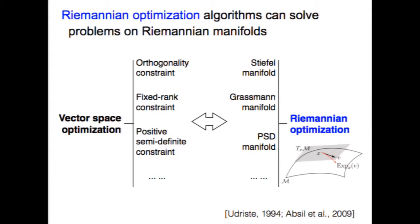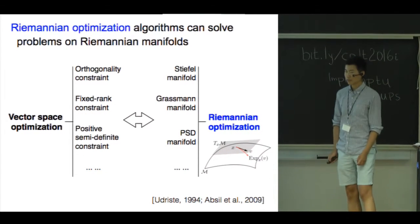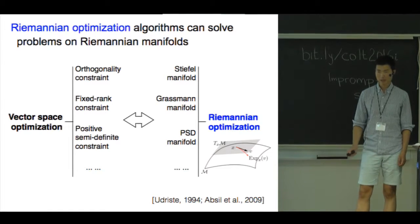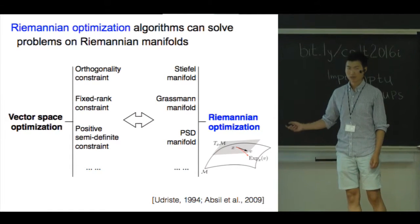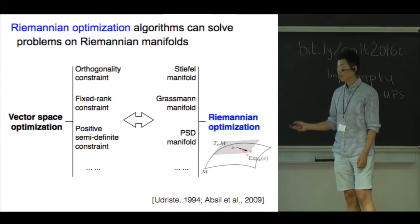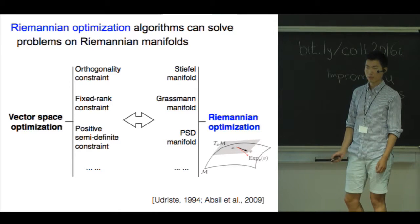Despite the removal of nonlinear constraints, non-asymptotic convergence rate analysis for Riemannian optimization algorithms has been missing in the literature due to the difficulty posed by the nonlinear Riemannian metric. In this work, for the first time we establish the non-asymptotic convergence rate for a rich class of Riemannian optimization algorithms.